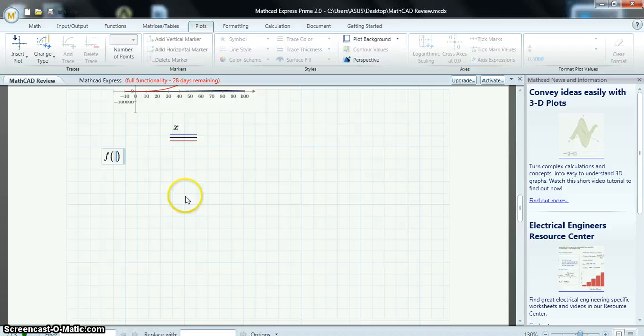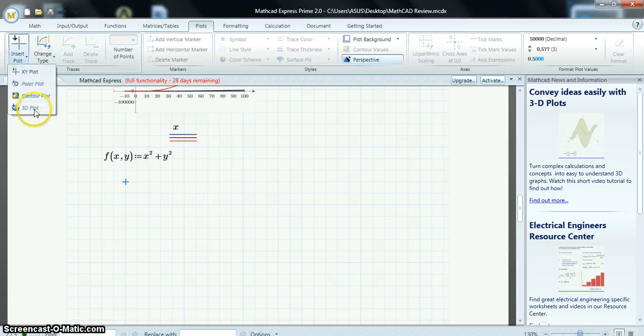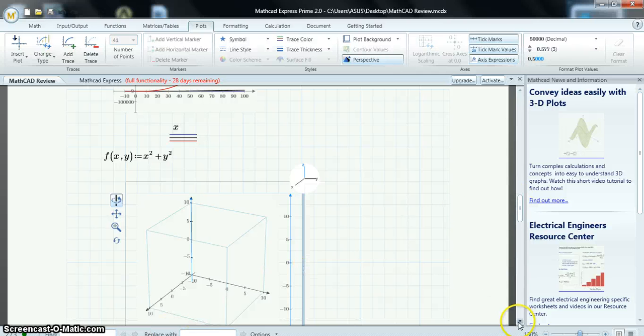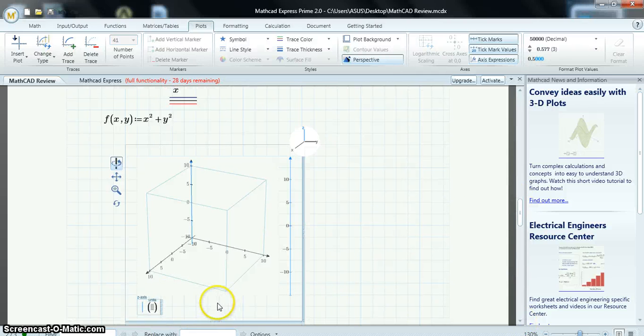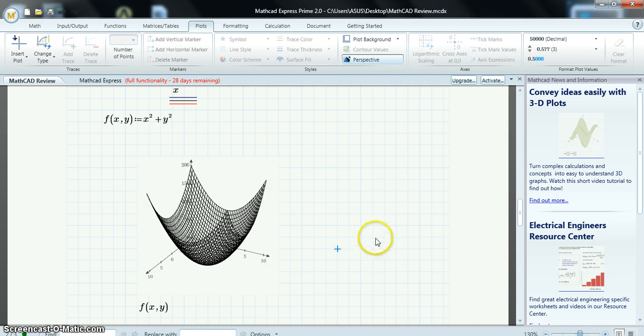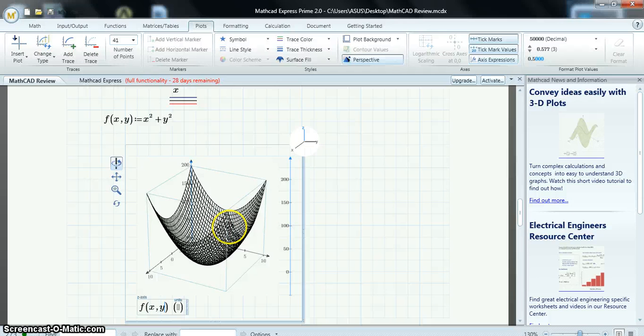I'll do a 3D plot. First, I'll define a function of x and y to be, actually, x squared plus y squared. And, now, insert 3D plot. And, scroll down. In the z-axis, I'll put f of x, y. Click off. And, it plots. And, I can interact with this plot by rotating it. Or, changing the axis values.